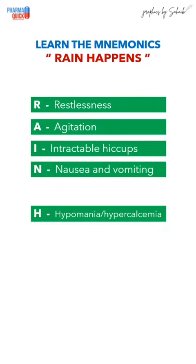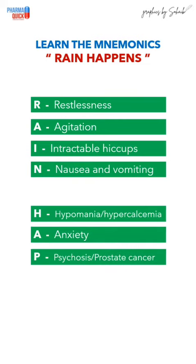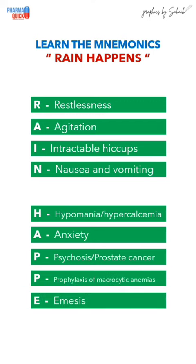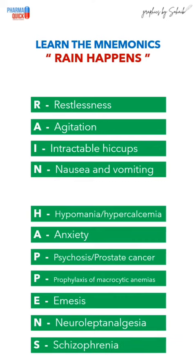H in HAPPENS stands for Hypomania and Hypercalcemia, A for Anxiety, P for Psychosis and Prostate cancer, P for Prophylaxis of macrocytic anemias, E for Emesis, N for Neuroleptoanalgesia, and S stands for Schizophrenia.